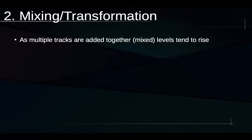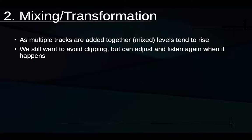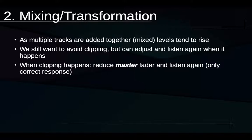When multiple tracks get added together, levels tend to rise. Like in recording, we still want to avoid clipping, but unlike in recording we can totally adjust and listen again when clipping does happen. What we need to do when clipping happens during mixing or transformation is reduce the overall levels — in Reaper by reducing the master fader — and listen again, because when clipping occurred we were listening to the clipping rather than to the real mix of our tracks.